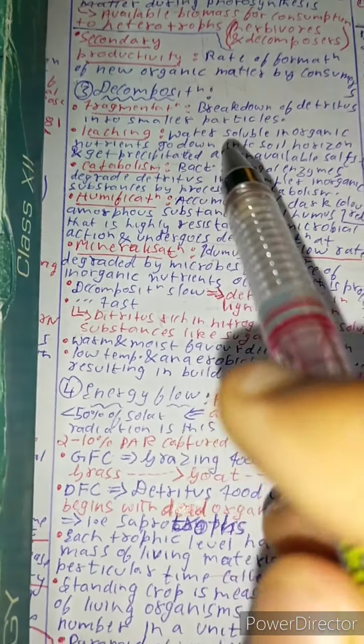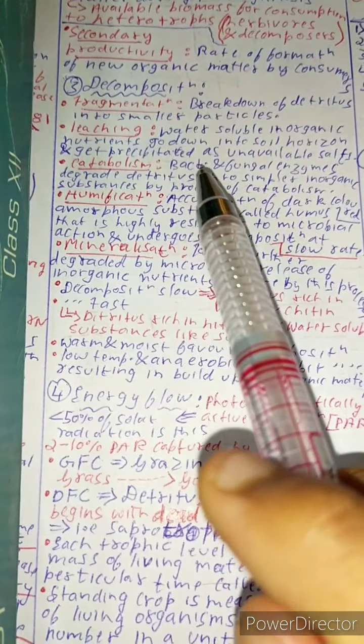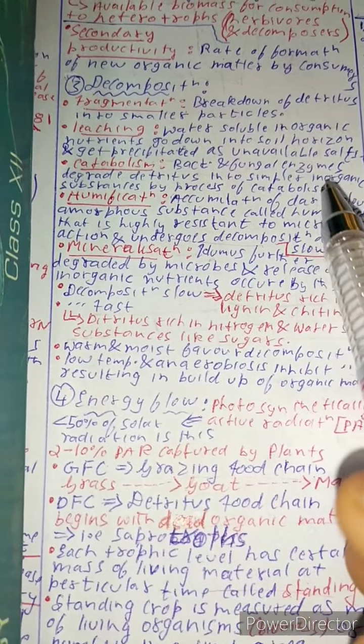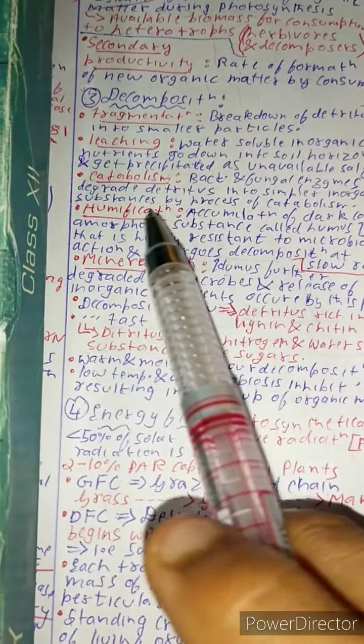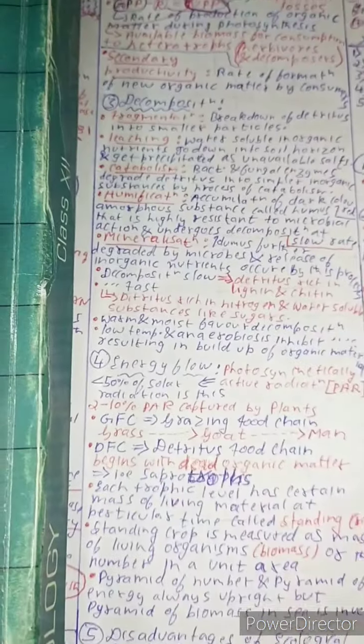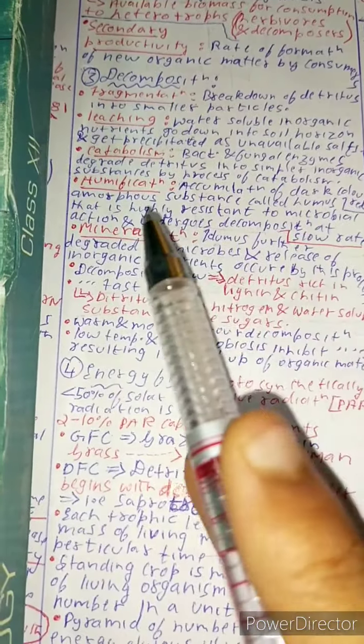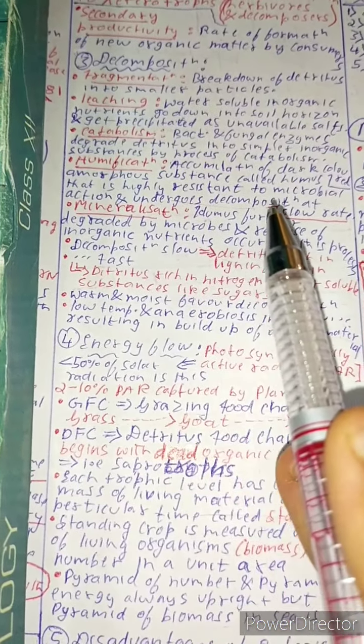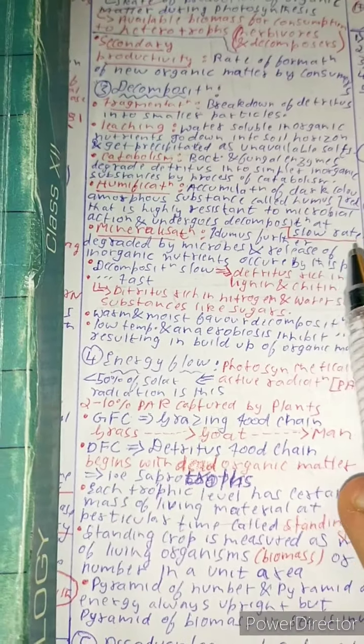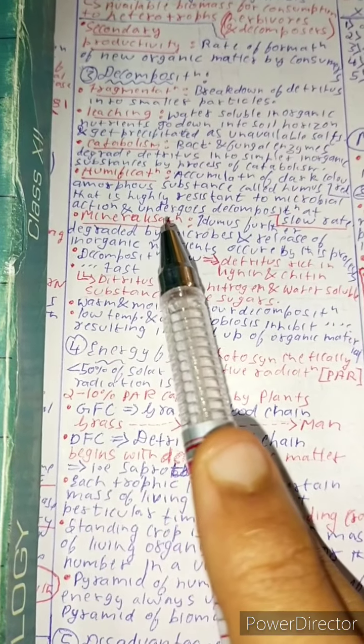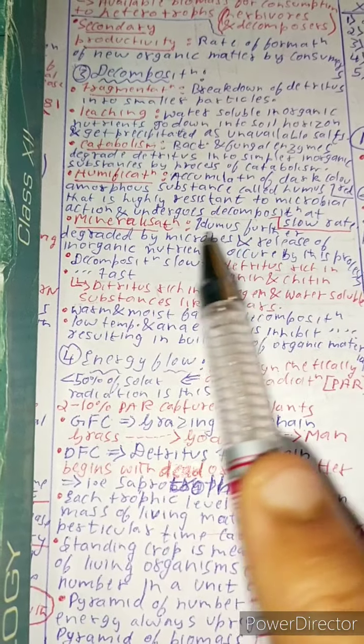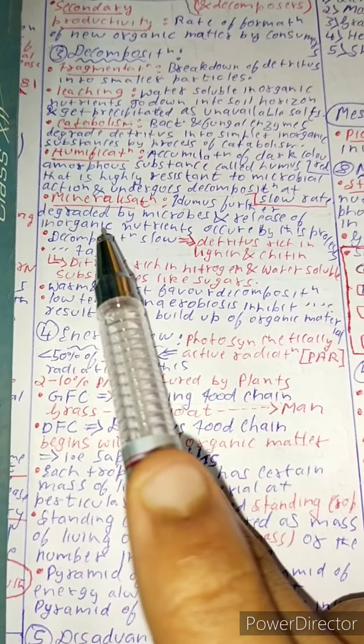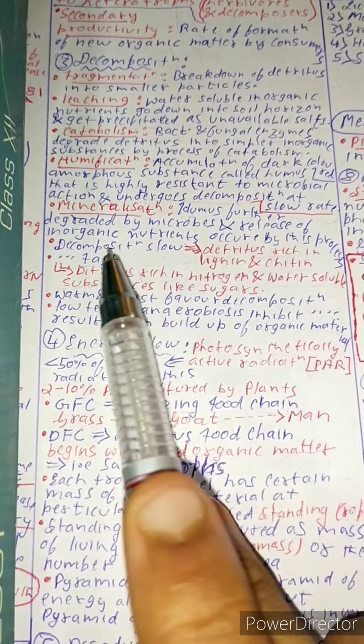Now what is catabolism? Catabolism, in which bacterial and fungal enzymes degrade detritus into smaller inorganic substances. Humification is the process of accumulation of dark colored substance called humus that is highly resistant to microbial action and undergoes decomposition at extremely slow rate. Mineralization, in which humus further degrades by microbes and release of inorganic nutrients occur by this process.